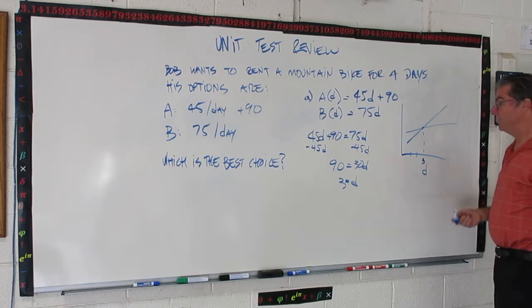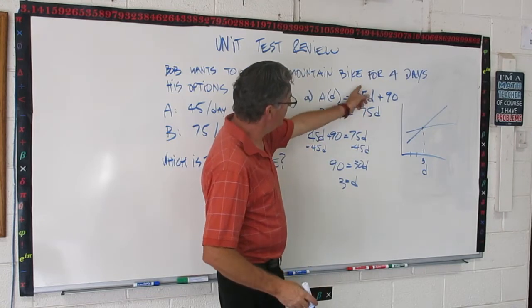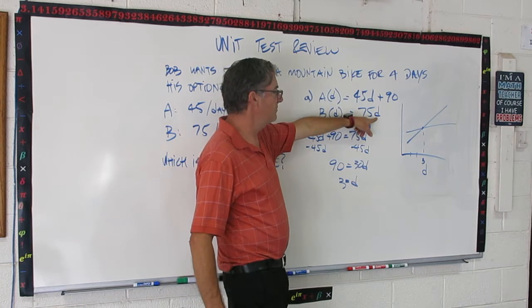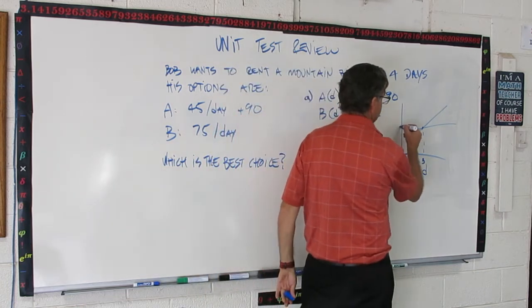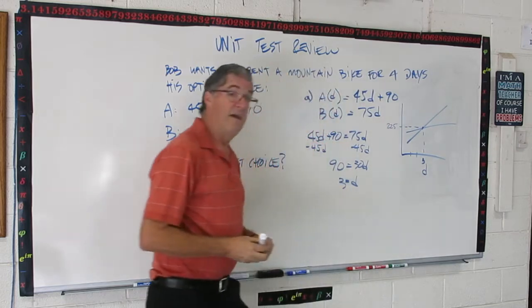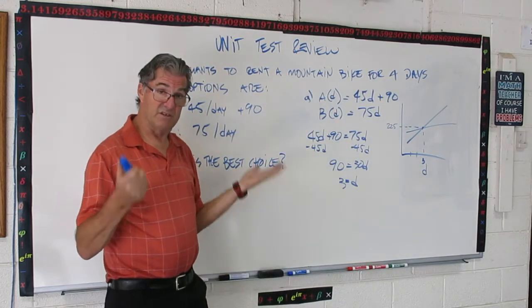So, we know that the break-even point where both functions are the same is at 3 days. Let's figure out how much that's going to be. So, basically, we just plug the 3 into either one of these functions. I'm going to pick the easy one. That's 75 times 3, which is 225. So, that's going to be 225. So, for 3 days, each of these is the same rate. So, that's great.